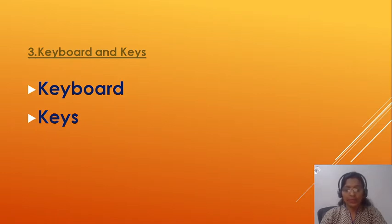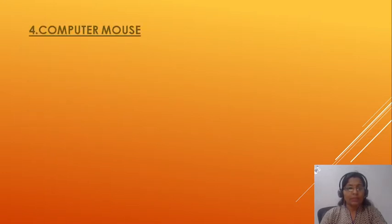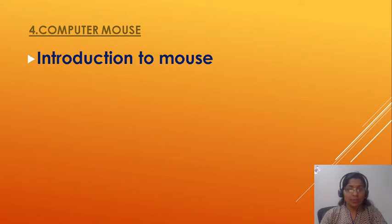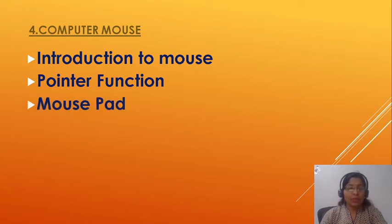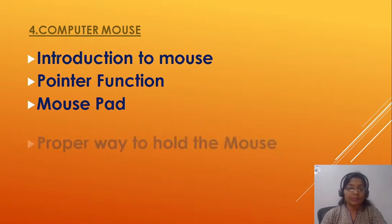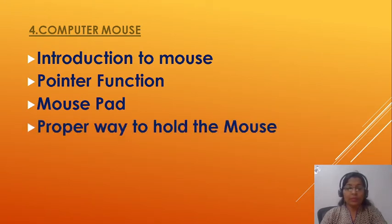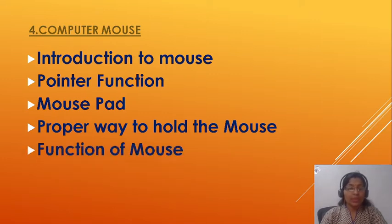The fourth chapter is 'Computer Mouse.' In this chapter we will cover introduction to mouse — what is a mouse — and pointer function, what functions the mouse pointer has and how we can handle it. Next is the mouse pad, what it is and its use. Then the proper way to hold the mouse.